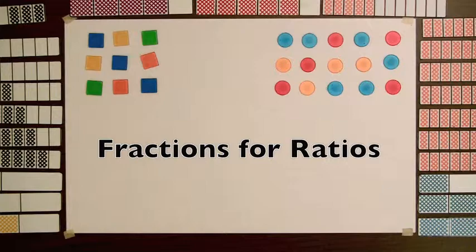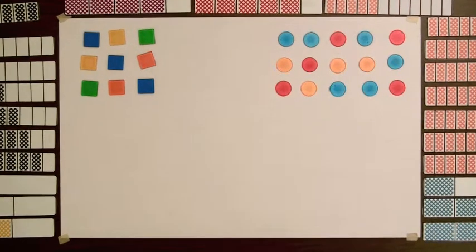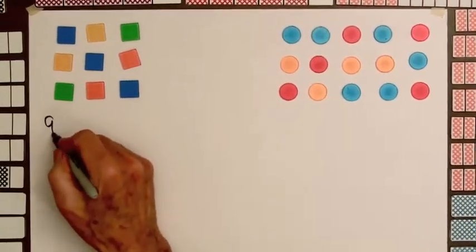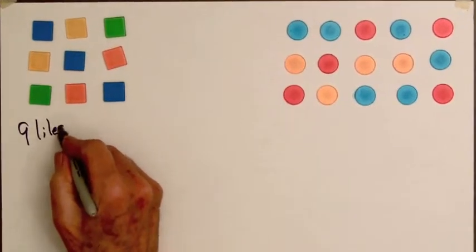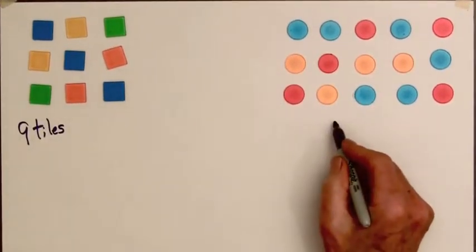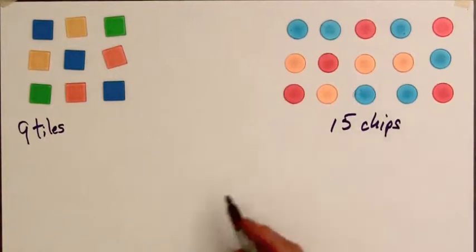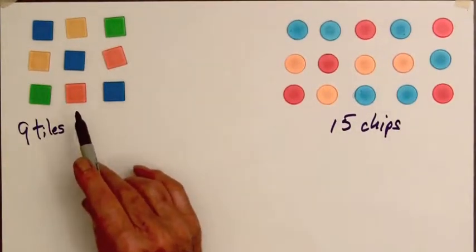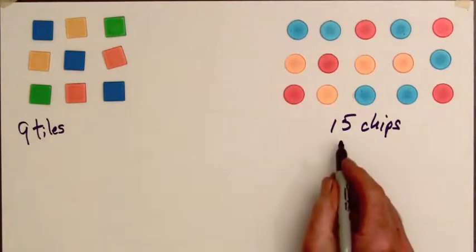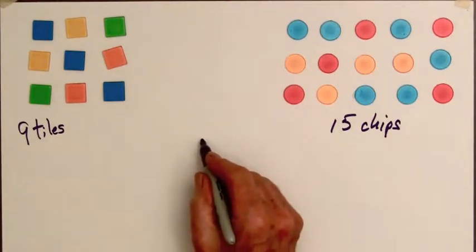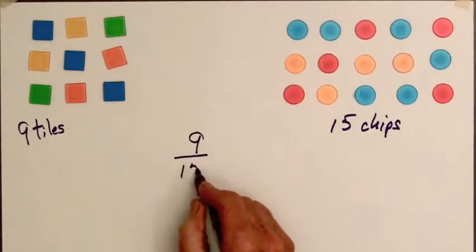A ratio is used to compare two different sets of objects. Here we have 9 tiles, and here we have 15 chips, and the ratio of the number of tiles to the number of chips is 9 to 15, and we write that as a fraction, 9 fifteenths.